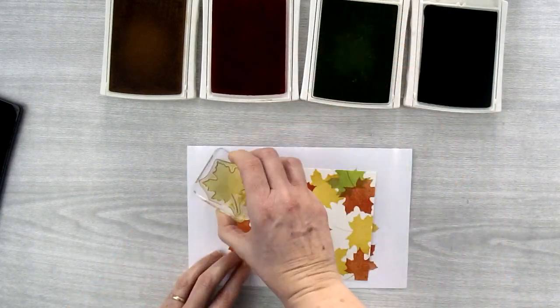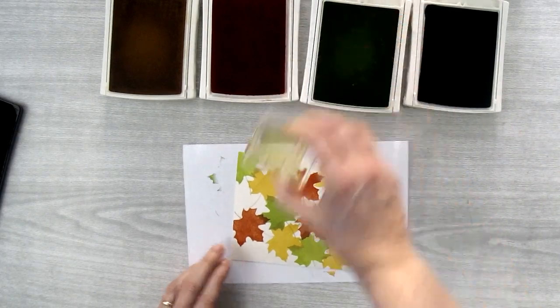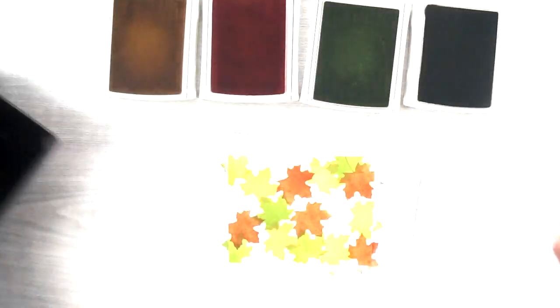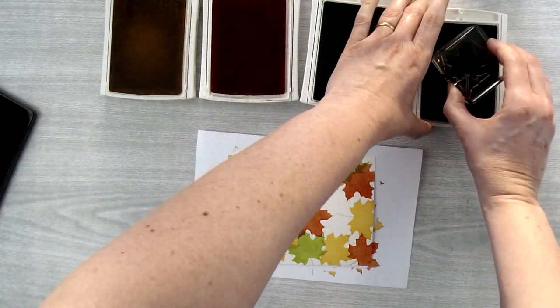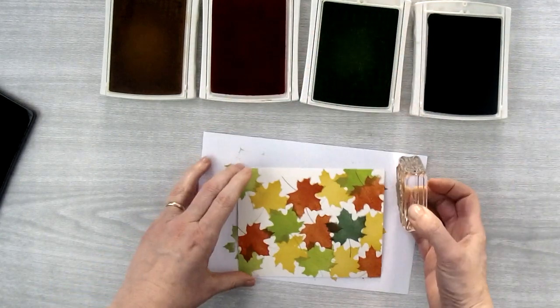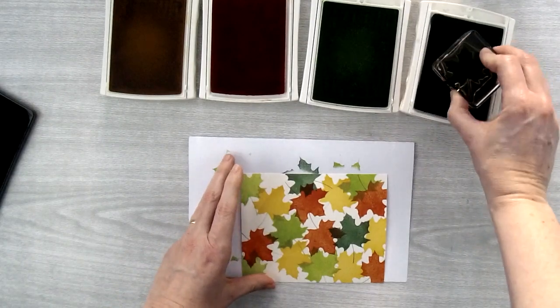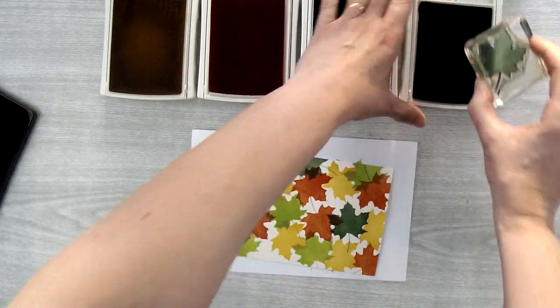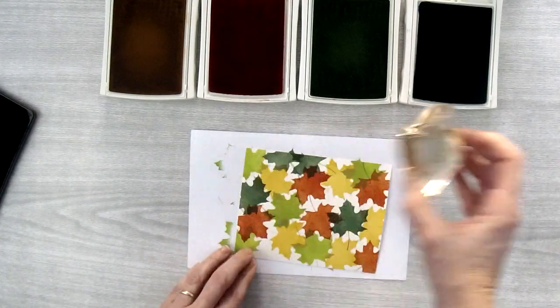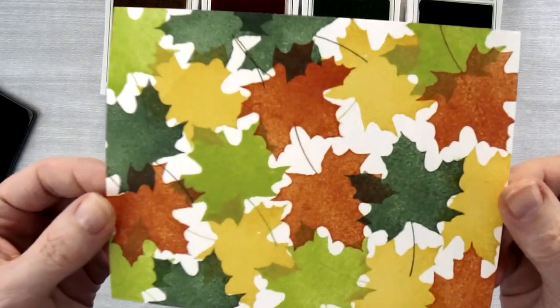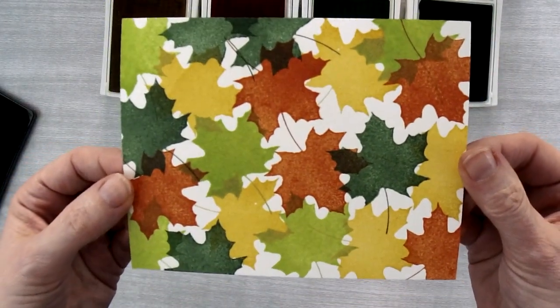I'm stamping it again about five times and then I'm going to use Garden Green for my last stamping. I'm trying to fill in some of these last spaces. Not every space needs to be completely covered but you want to get significant coverage. So here's what my stamp surface looks like.